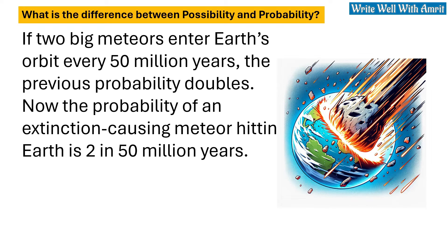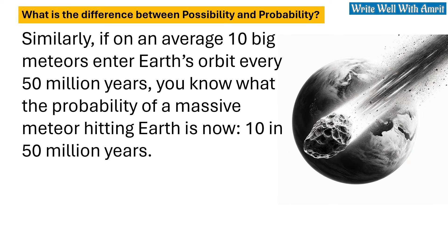Now, the probability of an extinction causing meteor hitting Earth is 2 in 50 million years. Similarly, if on average 10 big meteors enter Earth's orbit every 50 million years, you know what the probability of a massive meteor hitting Earth is now: 10 in 50 million years.